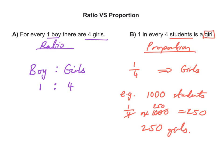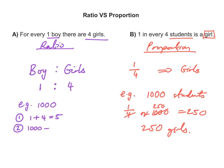Let's take an example where we could apply the ratio. Suppose there were 1,000 students. When solving a ratio problem, step one: we add the ratios. What's 1 plus 4? It's 5. Step two: we divide the total, which is 1,000, by the sum, 5. So we do 1,000 divided by 5, which is 200.